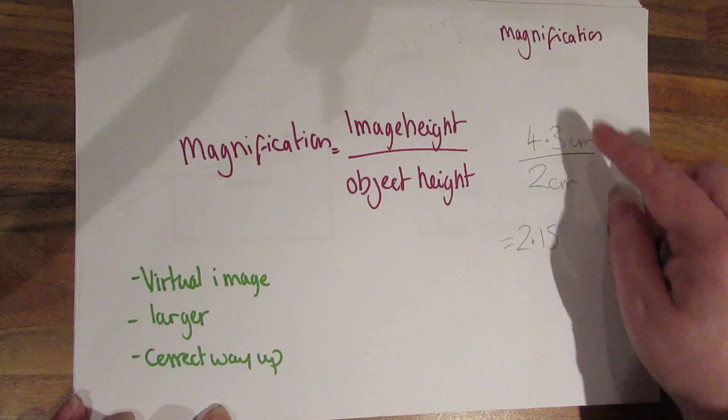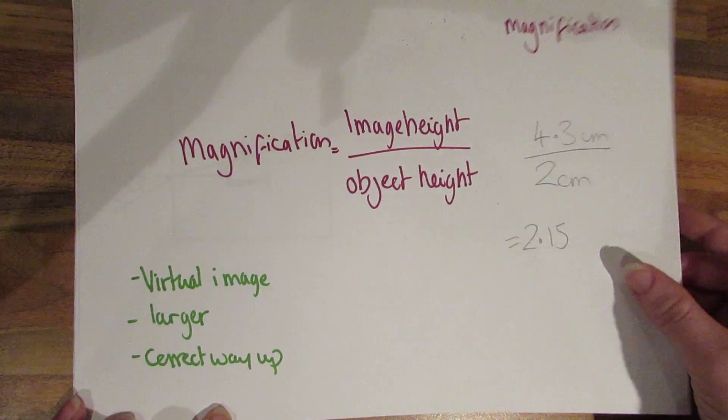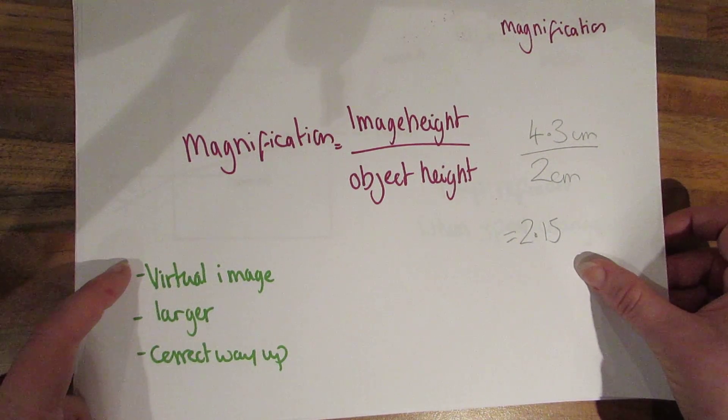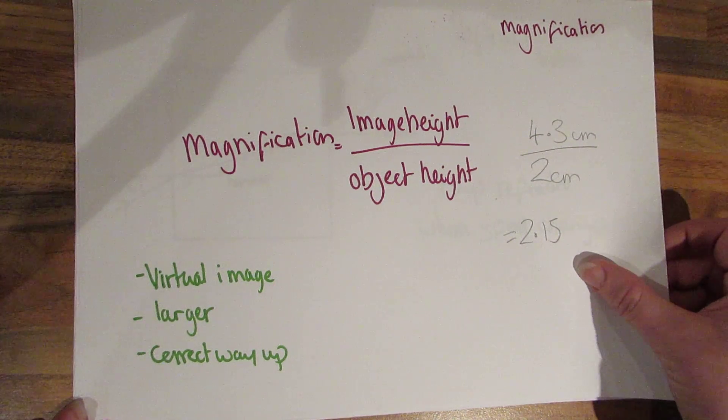This is just another example with some numbers plugged in so the image height divided by the object height and then no units needed for this. You want to be thinking about is it a virtual image or a real image. Is it larger or smaller and is it the correct way up or is it inverted.